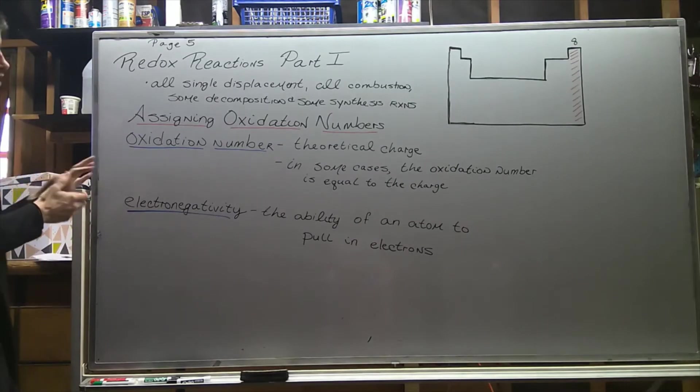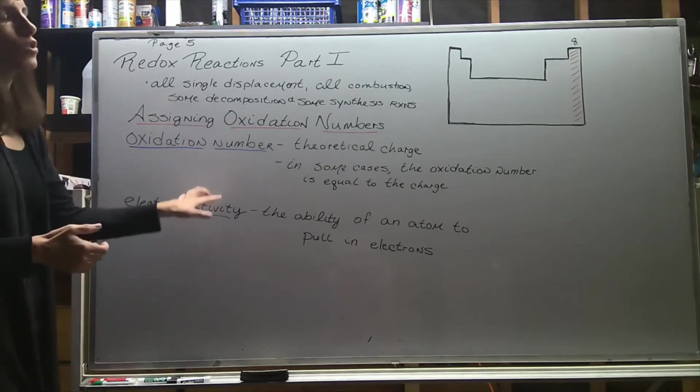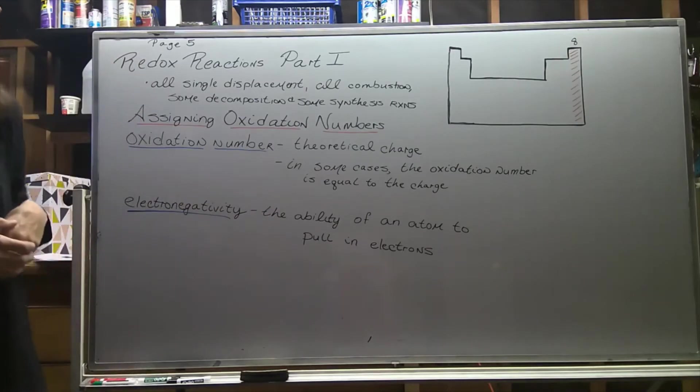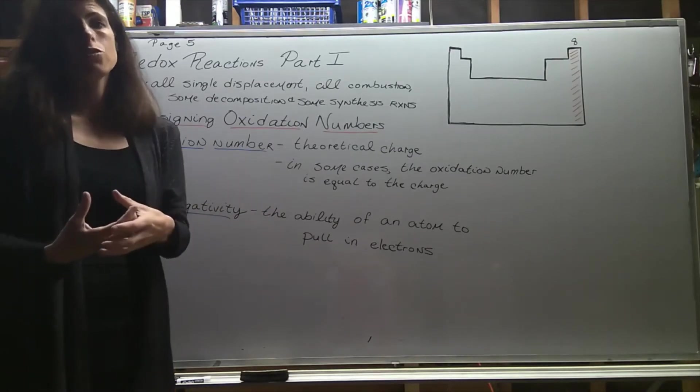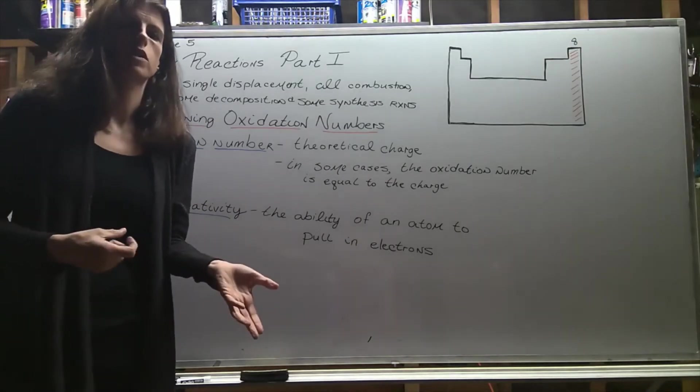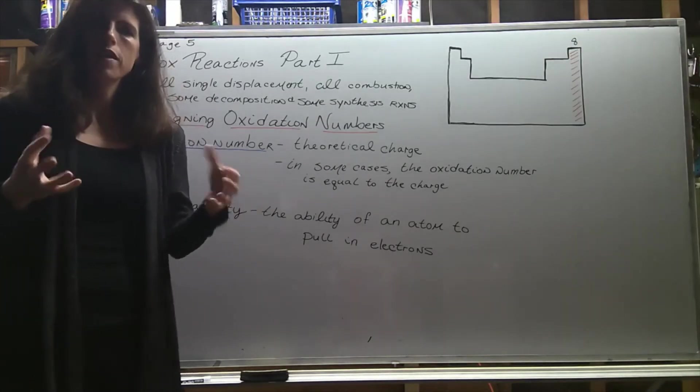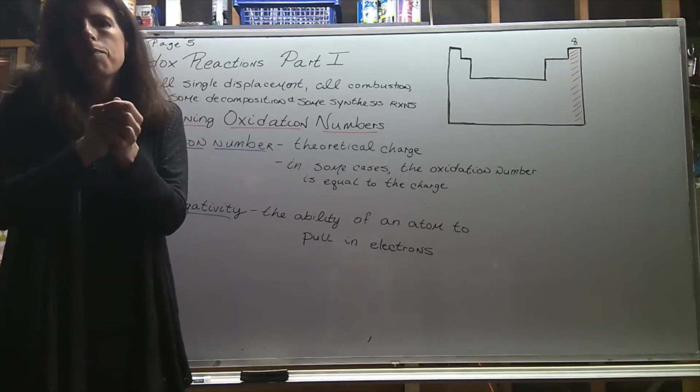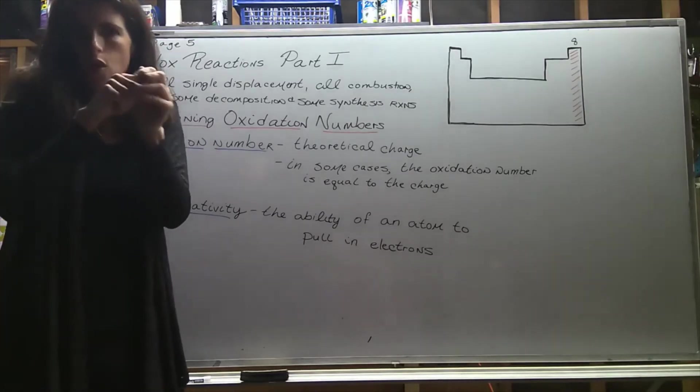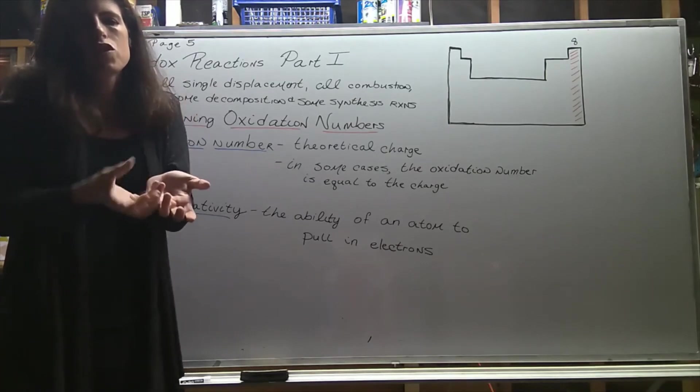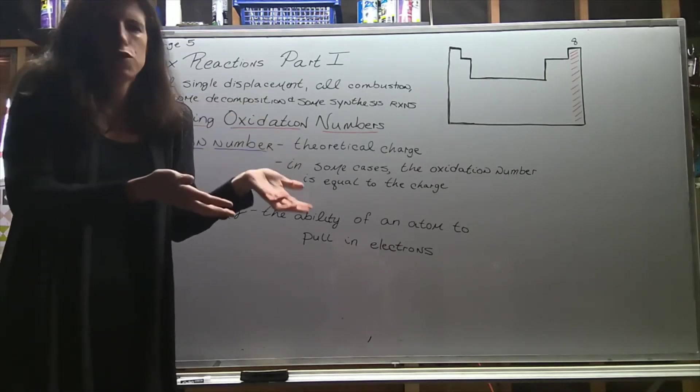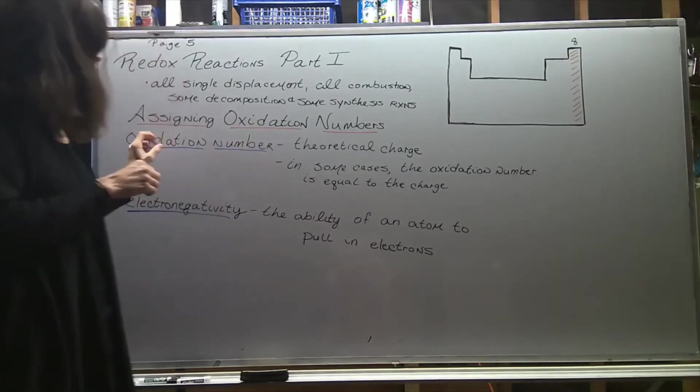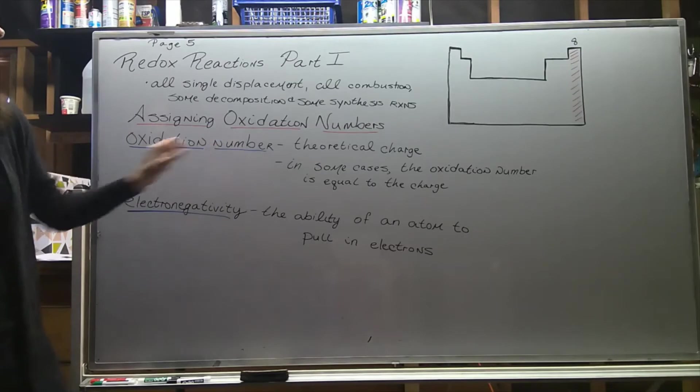Assigning oxidation numbers. Oxidation numbers are theoretical - theoretical charges. It wouldn't be fair to assign an actual charge to a covalent molecule because covalent molecules stick together, they never break up and never form like a plus one. They're always just together, so we can't say it has a certain charge, but we need to assign it a charge anyway. We call those theoretical, fake charges oxidation numbers.